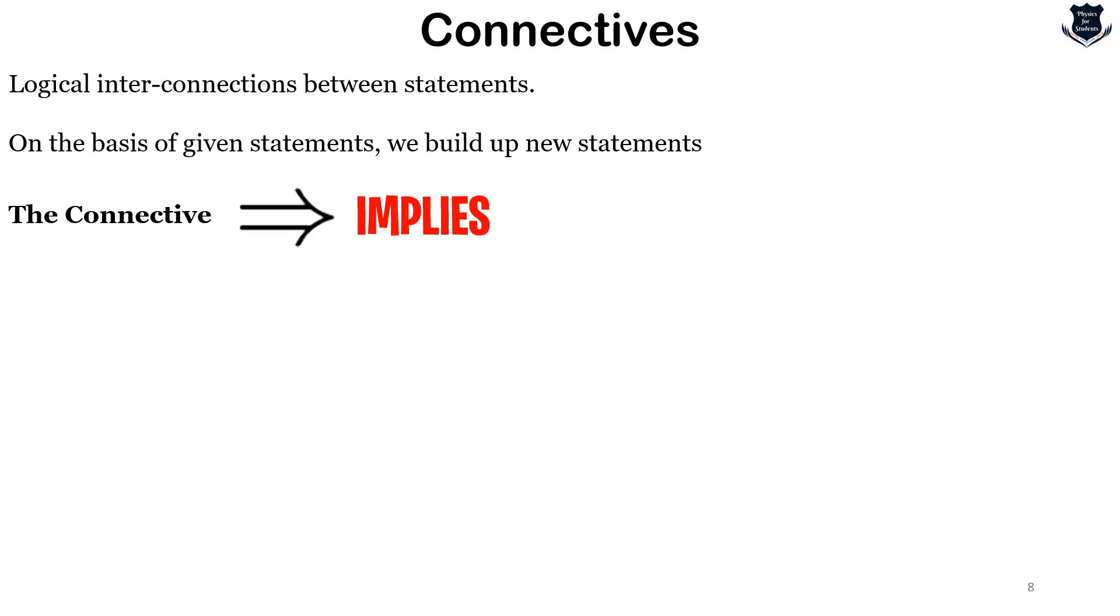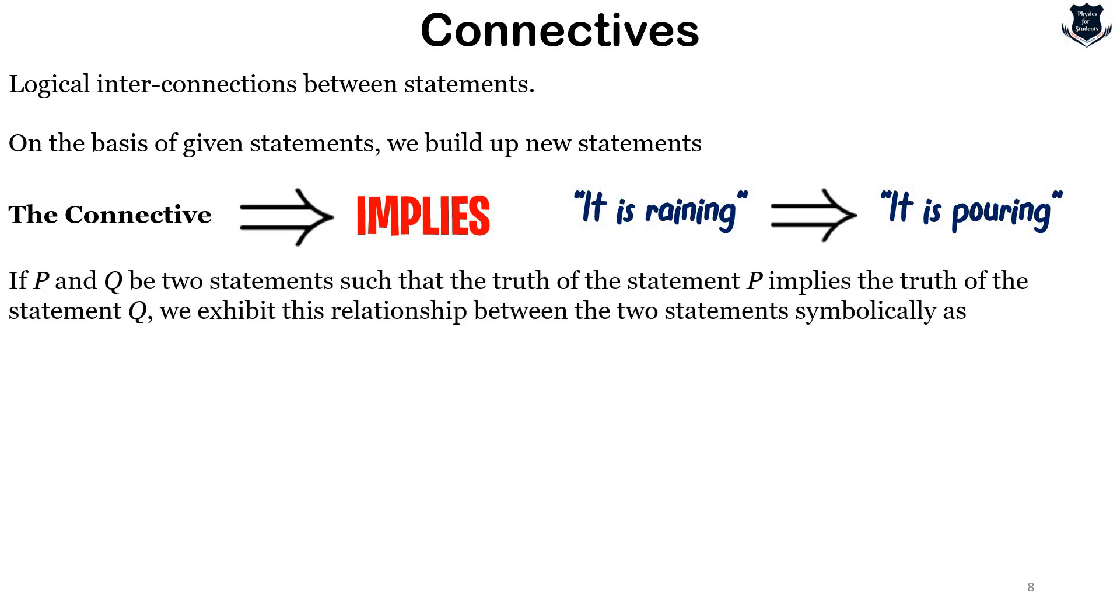If p and q are two statements such that the truth of statement p implies the truth of statement q, we exhibit the relationship between these two statements symbolically with an arrow. This symbol stands for 'implies.'